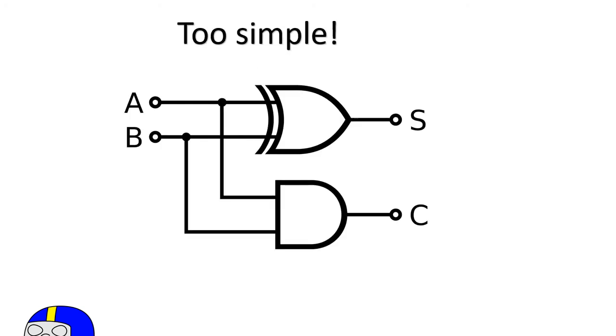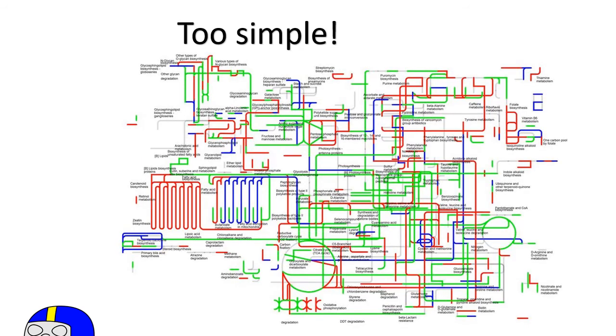The first issue is that current genetic circuits and switches that we design are too simple. These circuits may only have one or two programmable functions, which when compared to natural life falls well short of what we really need. Just look at this natural yeast metabolic circuit.